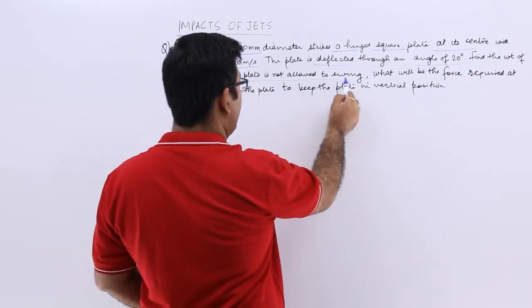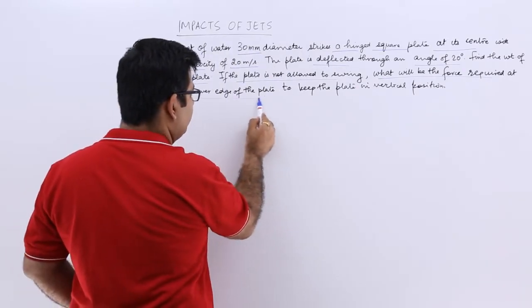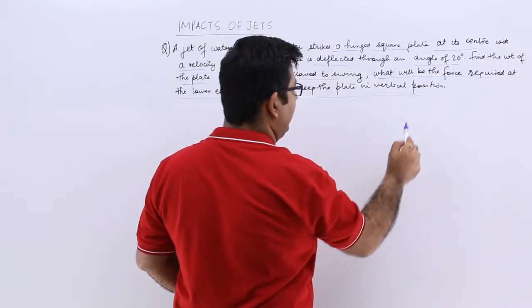Now if the plate is not allowed to swing, what will be the force required at the lower edge of the plate to keep the plate in vertical position?